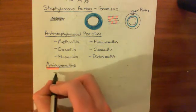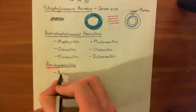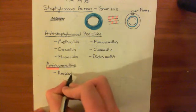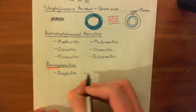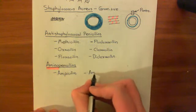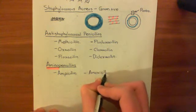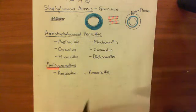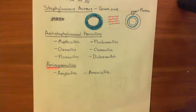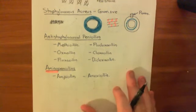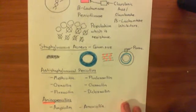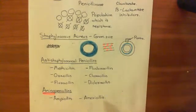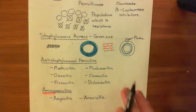Examples of these amino penicillins are ampicillin, which is a very famous drug, and amoxicillin. The problem with these amino penicillins is that they are incredibly susceptible to being broken down by beta-lactamase enzymes. So if the gram-negative bacterium starts producing beta-lactamase enzymes, these amino penicillins don't stand a chance.